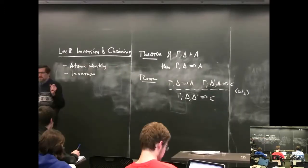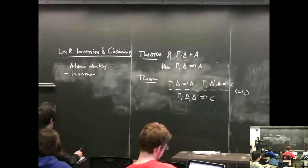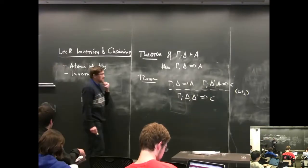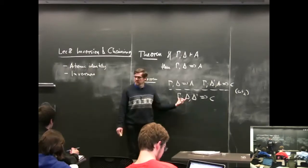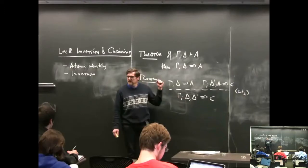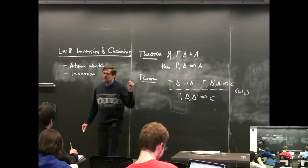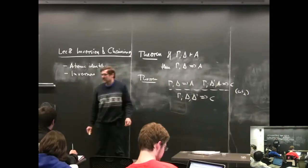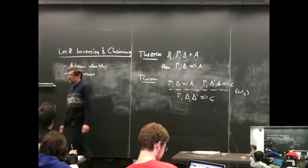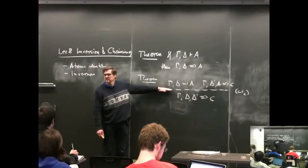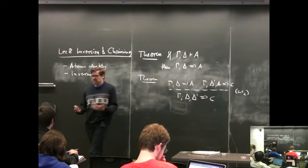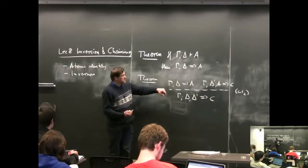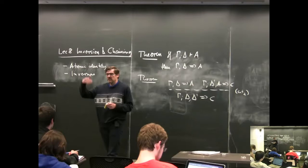Admissibility of a rule means it doesn't add anything new: whenever you can prove the premises, there is a proof of the conclusion, but we don't take it as a primitive inference rule. Why not just take cut as an inference rule? Because the whole point of this theorem is to eliminate it, so that when we try to prove something we don't have to consider this rule. The structure of the proof is really important when trying to see if something is provable.